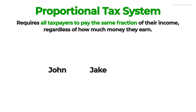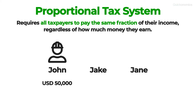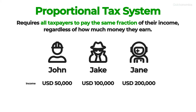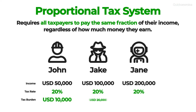To illustrate this, meet John, Jake, and Jane. John works as a construction worker and earns $50,000 a year. Meanwhile, Jake works as a private investigator and earns $100,000 a year. And finally, the highest earner of the group is Jane, who works as an astronaut and earns $200,000 a year. In a proportional tax system, our three friends are all taxed at the same rate — let's say 20% of their annual income. In that case, John has to pay $10,000 in taxes, whereas Jake's tax bill adds up to $20,000 and Jane has to pay $40,000.